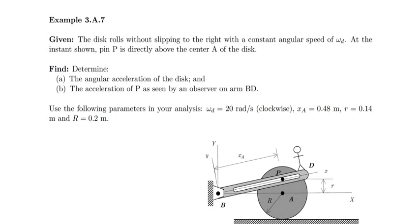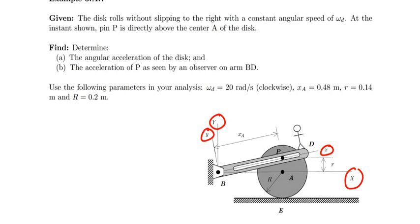To solve this problem, we're going to need to use a rotating reference frame. The frames are actually defined for us: our ground-fixed frame is the capital X and Y axes, and the rotating frame is given by the little x and little y axes. I'm going to relate, using these frames, the velocity and acceleration of point P as computed using the moving frame and the fixed frame, and use those equation relationships to compute the two quantities we're asked for.